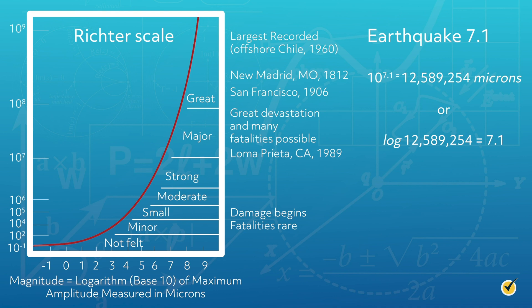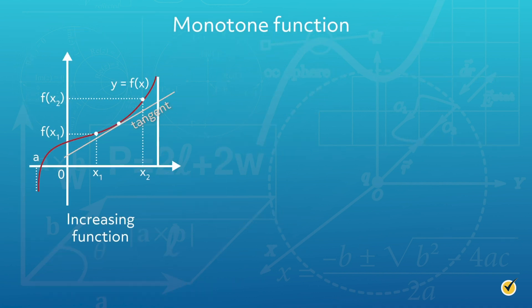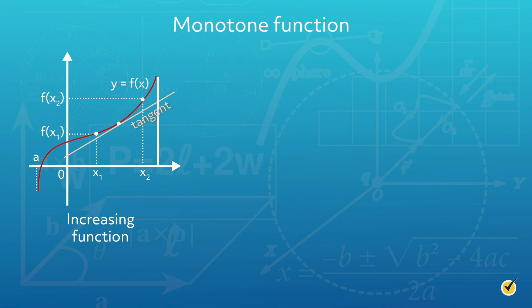There are a few common characteristics of all functions that can be recognized. A monotone function is always increasing as x values increase. This means that the change in y values is always positive as x values increase. Conversely, the y values of the function can always be decreasing as the x values increase. The change in y values would be negative in a decreasing function.